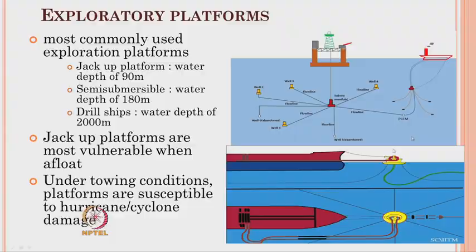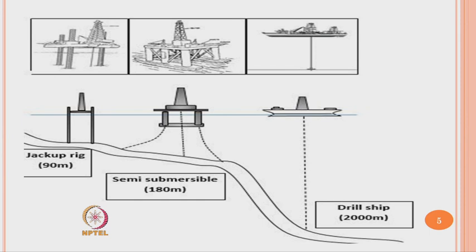Jack-up platforms are most vulnerable when afloat because under towing conditions, they are highly subject to hurricane or cyclone damage. Instances in the literature show that jack-up rigs during transportation are very severely damaged because of cyclone or hurricane effects. The conceptual picture shown here illustrates the connection of the subsea system with the main platform or offloading vessel using flow lines and subsea manifolds. This lecture focuses only on the structural systems for oil and gas exploration, not subsea manifold details.